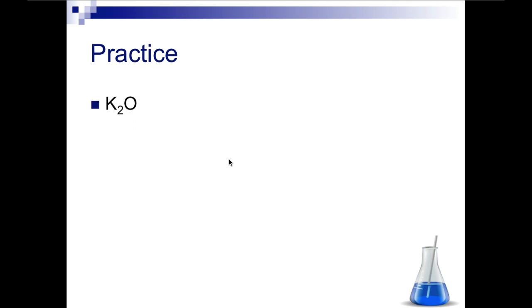Let's practice naming K2O. Pause your video, try this on your own, and then unpause it when you're finished. Welcome back. We have a metal bonded to a non-metal. K stands for potassium and O stands for oxygen. We're going to write the first syllable down for oxygen, which is 'ox,' and then add '-ide.' So it's going to be potassium oxide. K2O is potassium oxide.